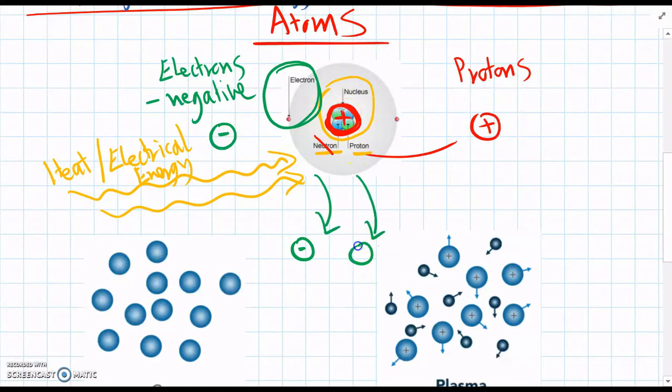So suddenly, electrons fly off, and they move around on their own. And that leaves the atom to have an overall positive charge now, because it's lost some negative charge.